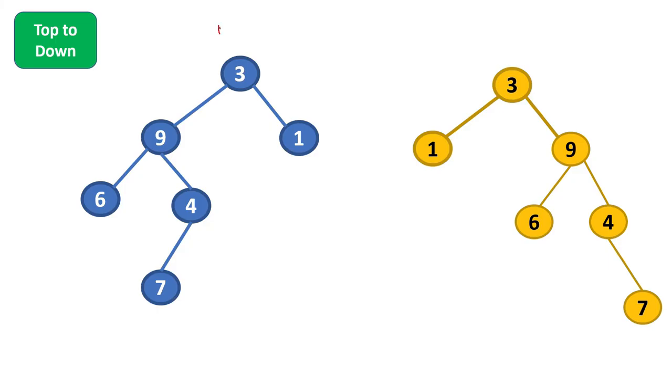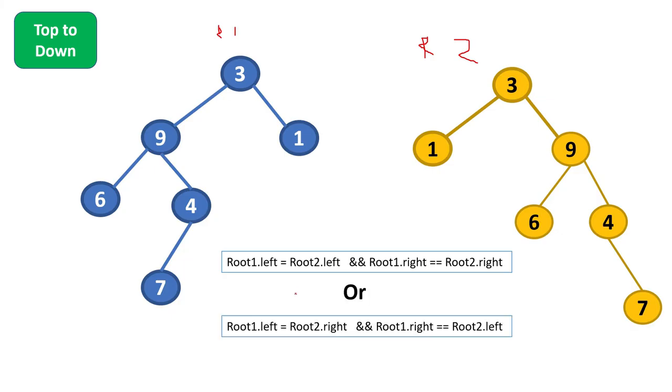So this will be our root1 and this will be root2, right. So for root1 and root2, what we have to check, that 9 and 1 here is present and here it is present 1 and 9. So we will check root1.left equal to root2.left or not, means they are similar or not, and root1.right equal to root2.right or not. That is one condition we can check. Or what we can check, root1.left equal to root2.right and root1.right equal to root2.left.